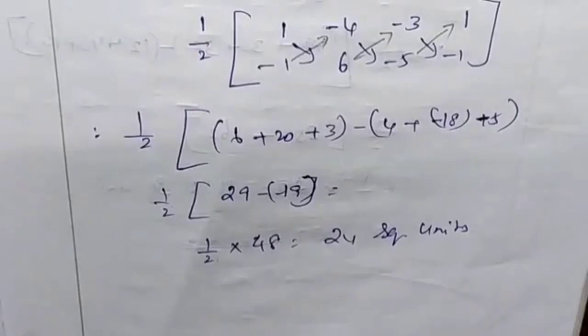The answer is one by two times 24 equals 12 square units. This is the answer.